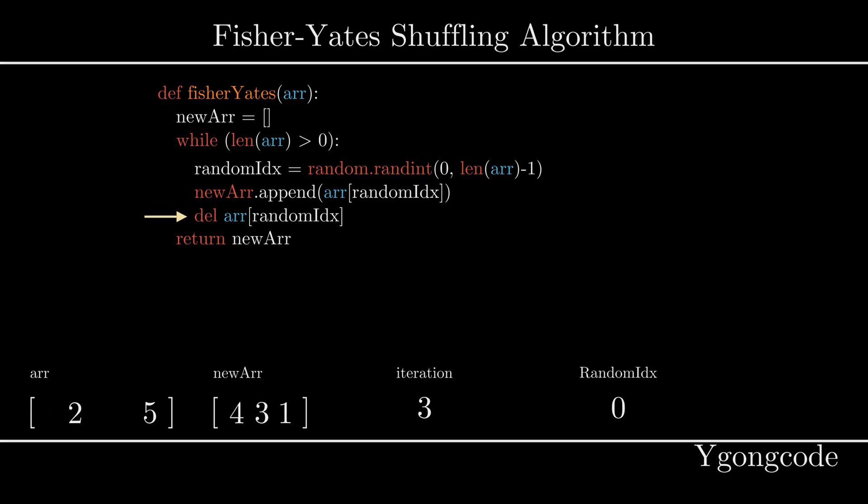However, this algorithm is suboptimal because at every iteration, we incur a resize cost from removing the element from the input array since we need to resize and potentially shift every element to its new position. The time complexity of this operation is O(n), where n is the size of the array.